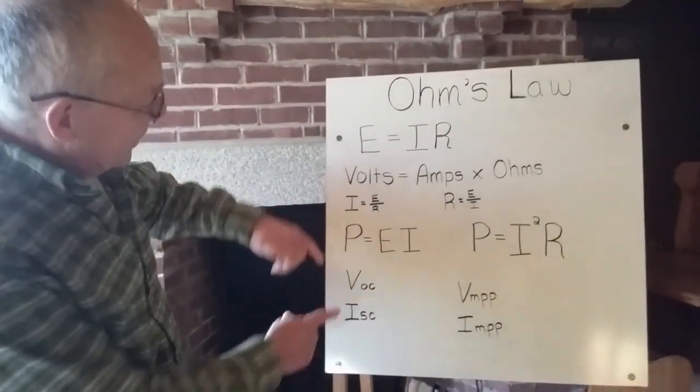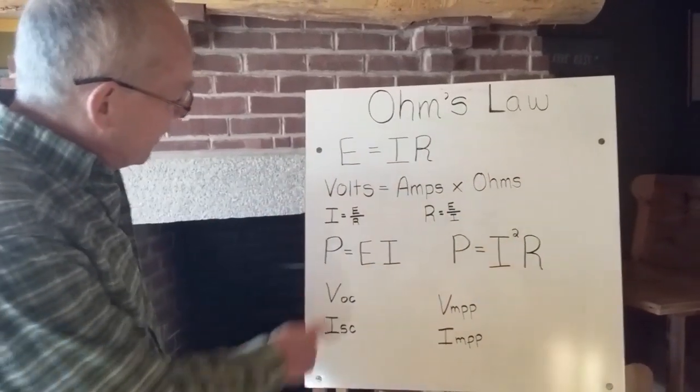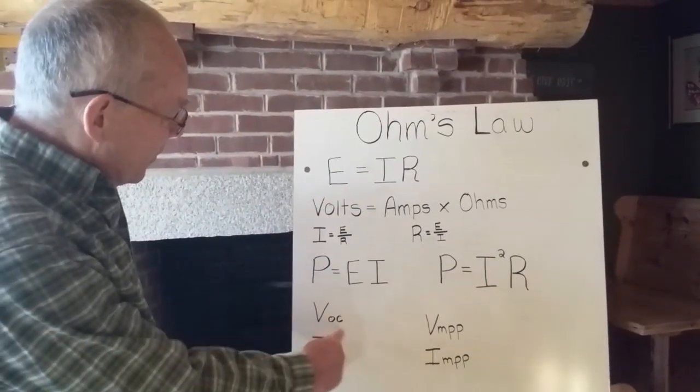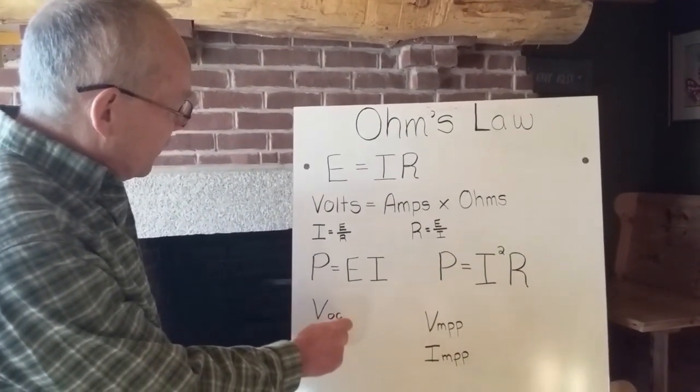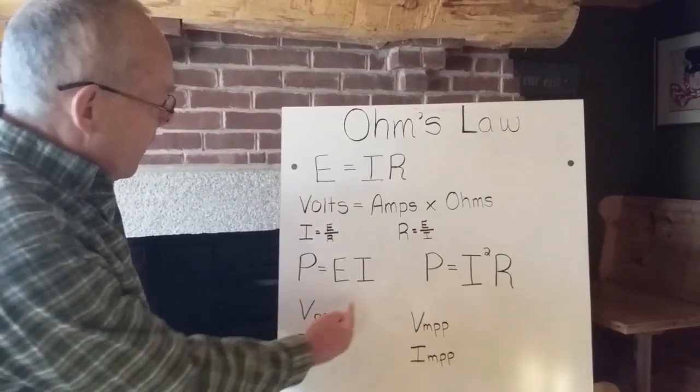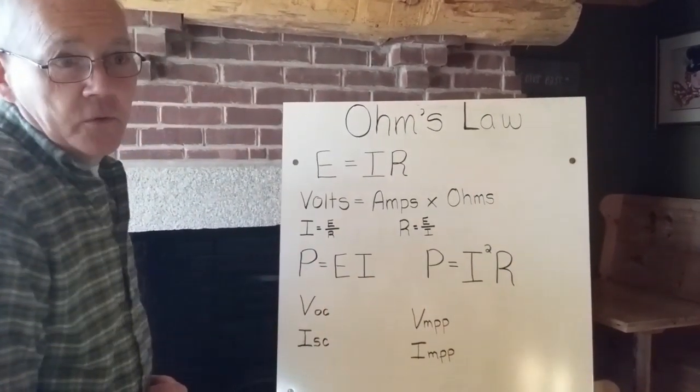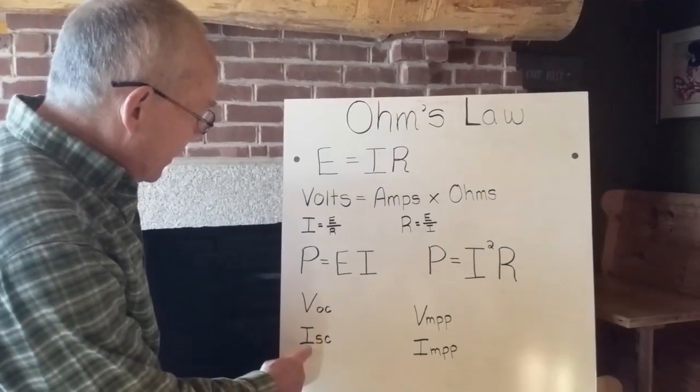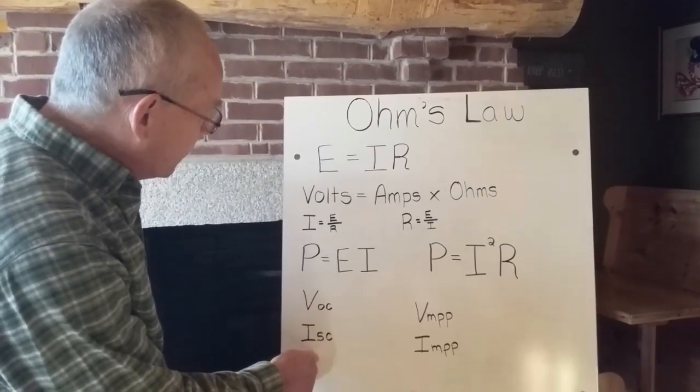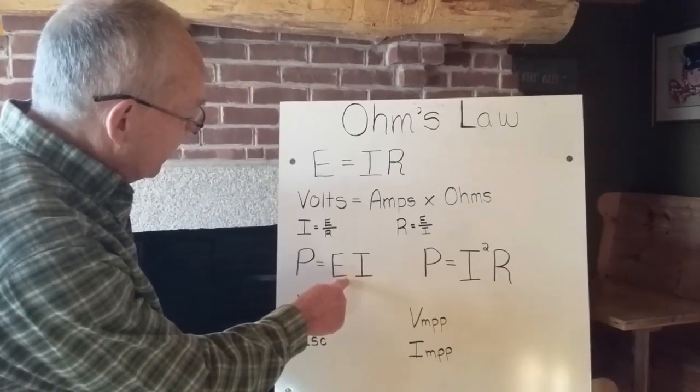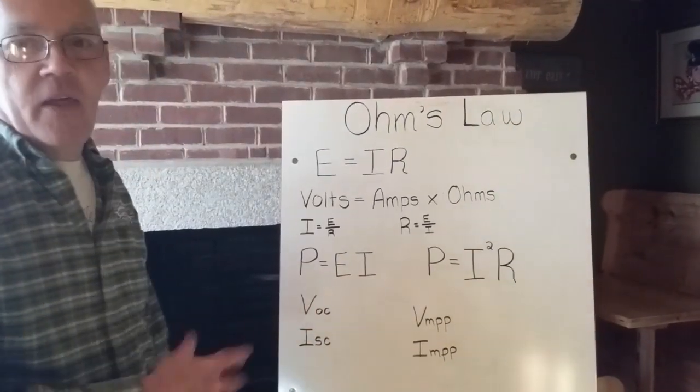But notice that if we go back up to Ohm's law and our power equations, when the voltage is open circuit and there's no load, current is zero. So when current is zero, power is zero. So that doesn't help. When the current is short circuited, the voltage is zero. When the voltage is zero, the power is zero. That doesn't help us.